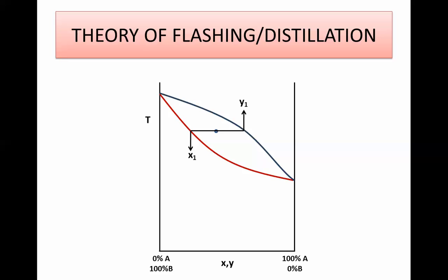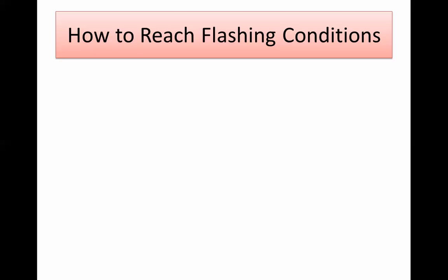This is flashing — you just put the system to this point and it spontaneously splits. For distillation, what you do is cool this vapor a little bit so it reaches another point inside the liquid-vapor region and then it splits into two phases — that's another tray. The same for liquid: you heat it a little bit, it reaches another point and splits. So you can say that distillation is just a group of flash separators in series.